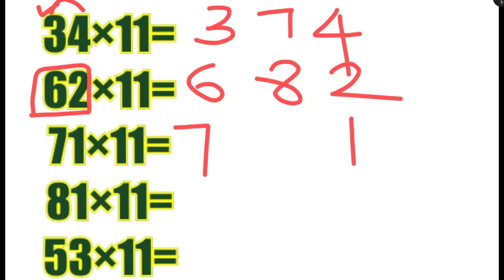8 plus 1 is 8. 81 equals 11. We are able to multiply by 11.